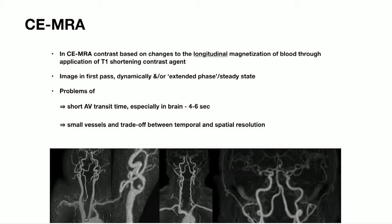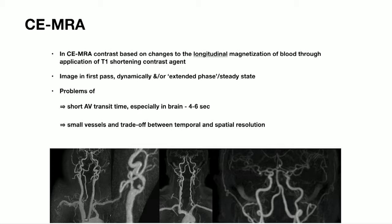Contrast-enhanced MRA as opposed to non-contrast. The aim with contrast enhanced is to reduce the T1 of the blood pool during the imaging of whichever vascular compartment you're looking at, and reduce it such that it stands out from the background, usually fat. We usually image in first pass either dynamically, but also nowadays our group uses a lot of extended phase or steady state imaging. The main problem is the short passage of contrast through an arterial compartment, which in the brain can be as little as four to six seconds.